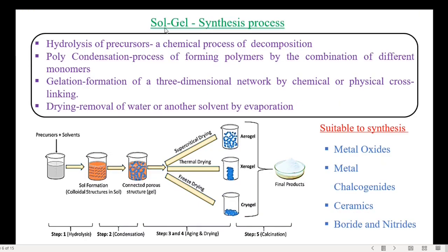Now let us see the various steps involved in the sol-gel synthesis process. Step one is hydrolysis — a chemical process of decomposition of precursor materials. Step two is polycondensation, which is the formation of polymers by the combination of different monomers involved in the process. This is followed by the formation of a three-dimensional network by chemical or physical cross-linking — that is called the sol-gel process. The final step is the removal of water or another solvent by evaporation.